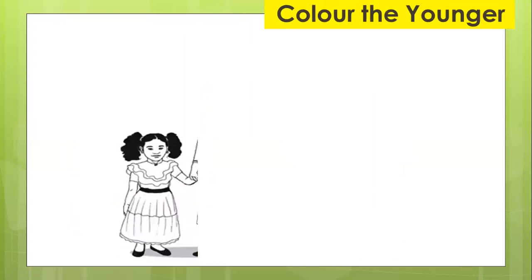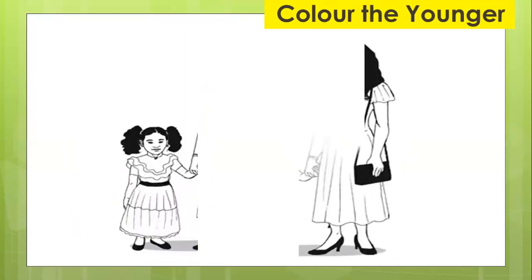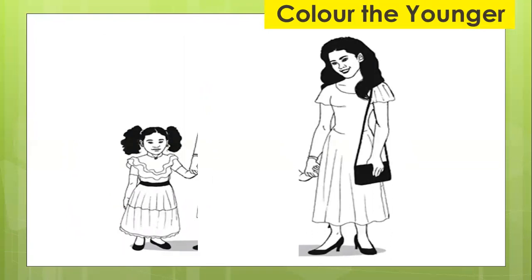Now let's check our instructions. It says color the younger. Who is younger between these two? I can see the little girl with high hair — she is younger. She's wearing a skirt and her hair is tied in two ponytails.